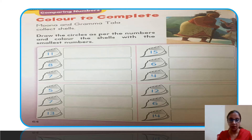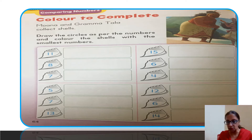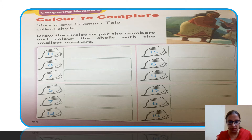To complete: Moana and grandma Tala collect shells. We can see in the pictures Moana and grandma. Let's read ahead: draw the circles as per the numbers, and color the shells with the smallest numbers.